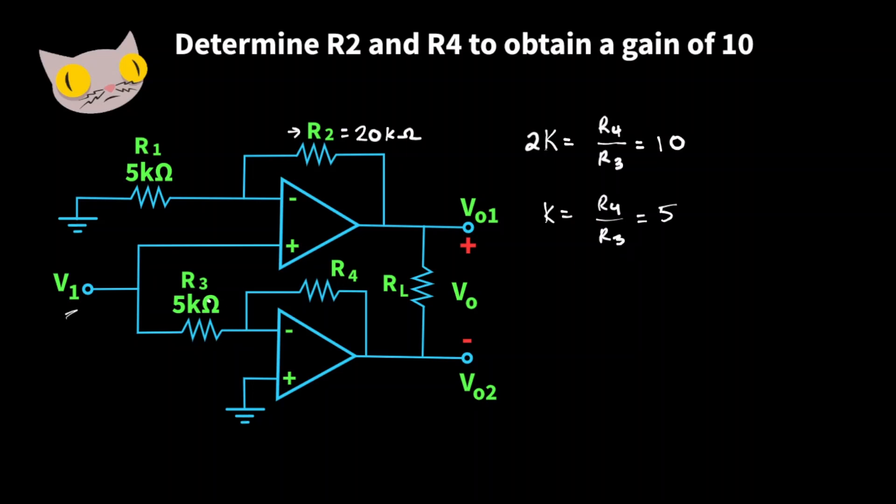We know R3 is 5k ohms, thus R4 is going to be 25k ohms. So that was just a quick review problem for those of you studying op amps.